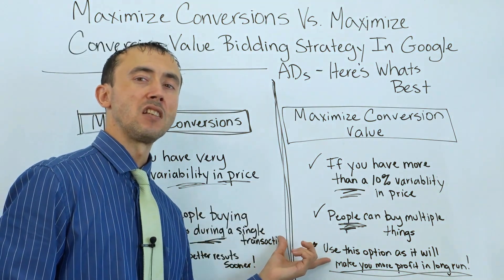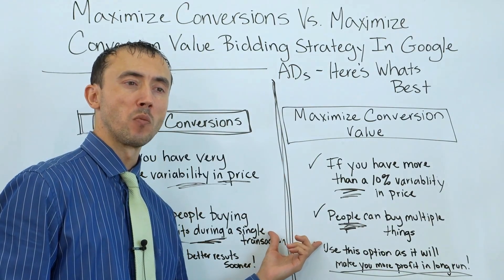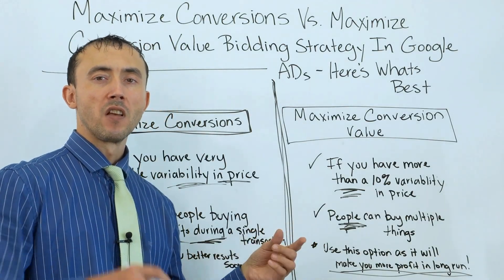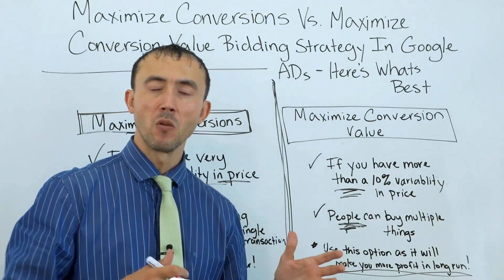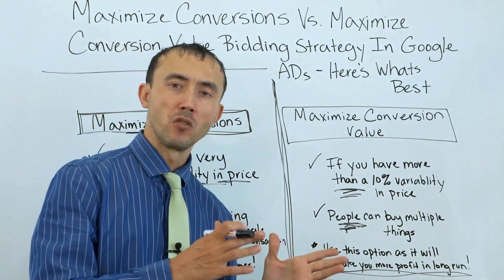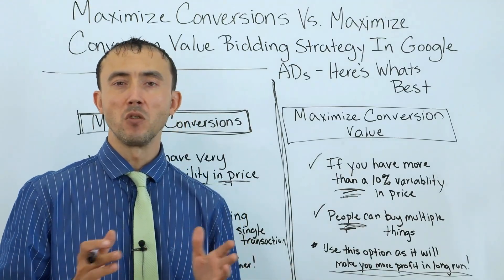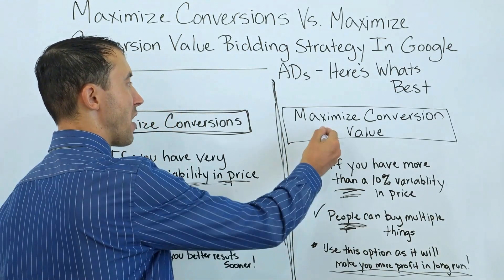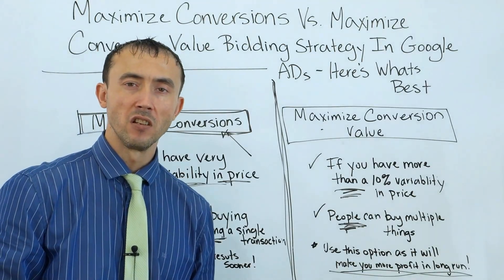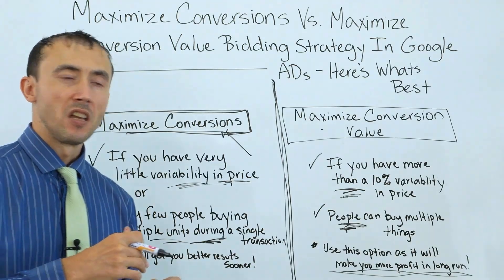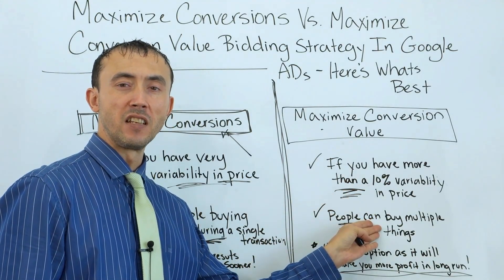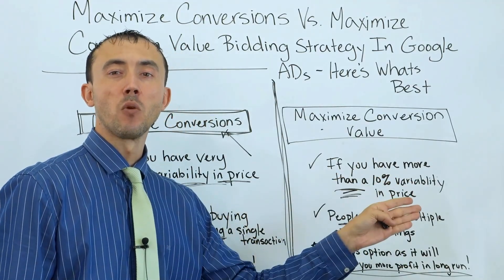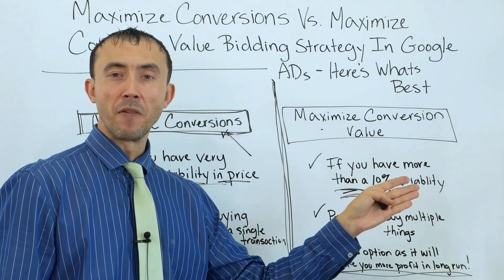Your niche and your actual product or service line are going to dictate which of these you're going to use. If there's only a minor improvement you're going to get using maximize conversion value bidding strategy, use maximize conversions and take the hit on long-term return to get faster results. But if there's greater than 10% variability in the price of your items, or at least 5-10% of people are buying more than one item at a time, use maximize conversion value bidding strategy because it's going to make you at least 25, 50, or 100% more profit from your ad account long-term.